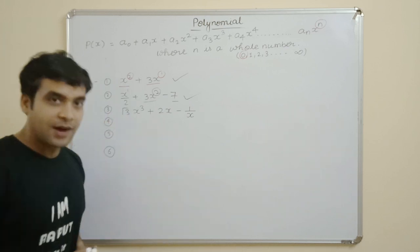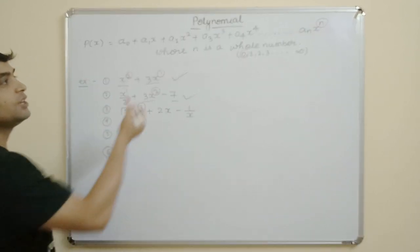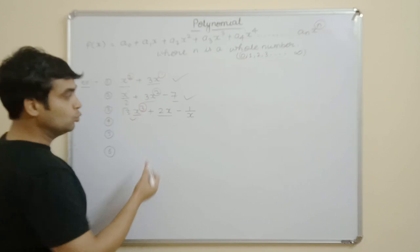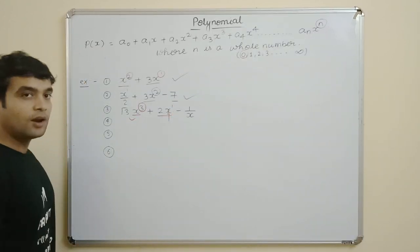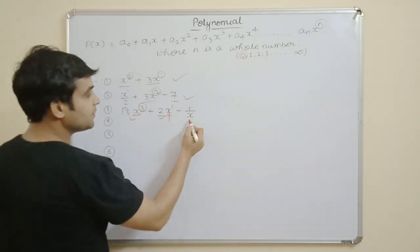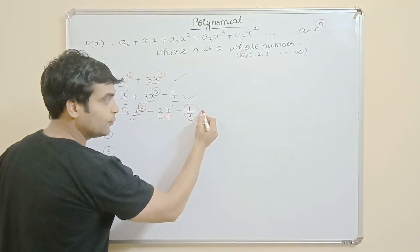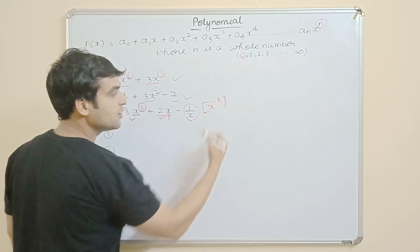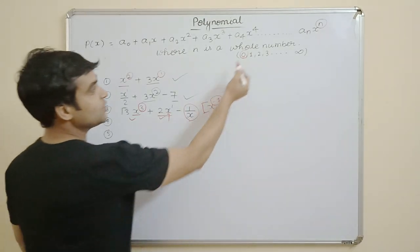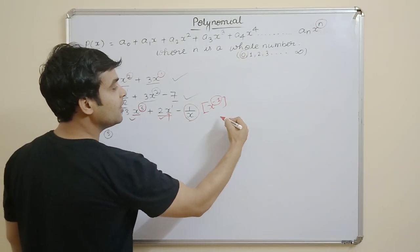In the first term, the variable has power 3, and 3 is a whole number. In the second term, the variable x has power 1, and 1 is also a whole number. But the third term — 1/x — becomes x raised to power minus 1. Minus 1 is not a whole number. So the whole expression is NOT a polynomial.